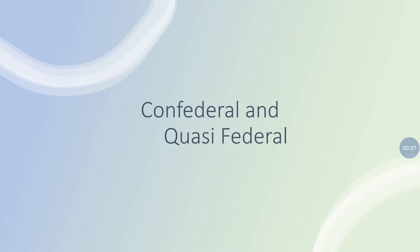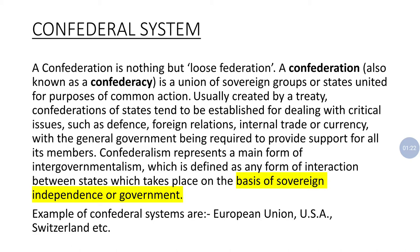Federalism, as you all remember, is nothing but the division of power between state and union. The power division can happen in two ways: either the center is stronger as compared to the states, or the states are more powerful, having more autonomy, more sovereignty as compared to the center. In this video we are going to study the types of federalism — confederal and quasi-federal.